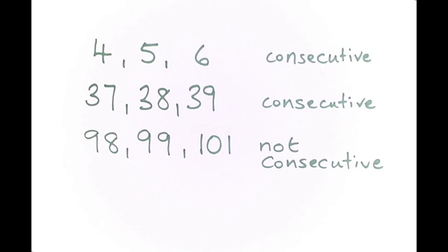Ninety-eight, ninety-nine and a hundred and one are not consecutive because there's a gap where the hundred should be.